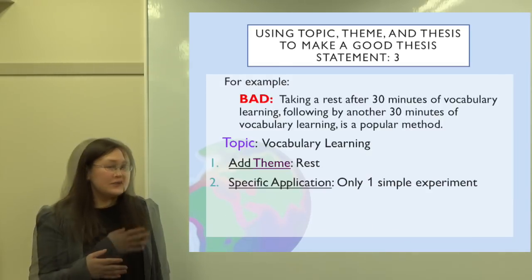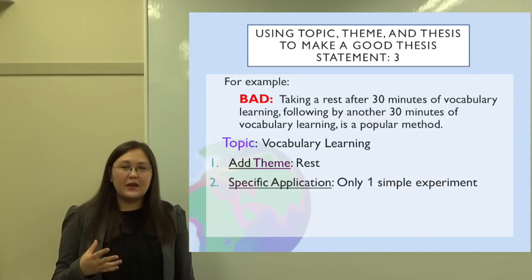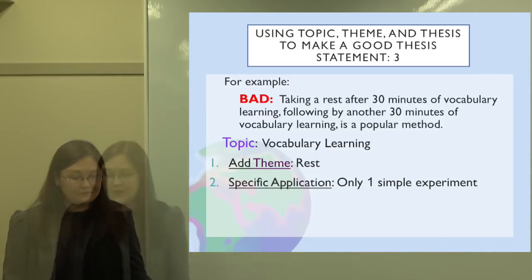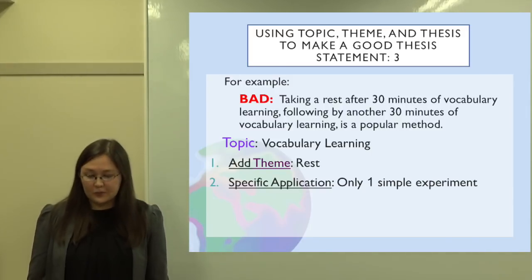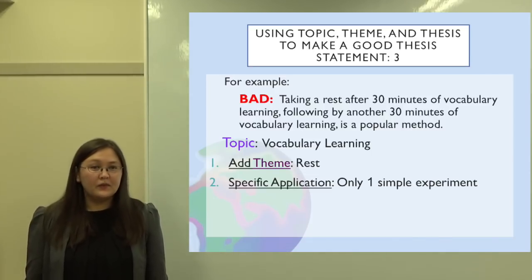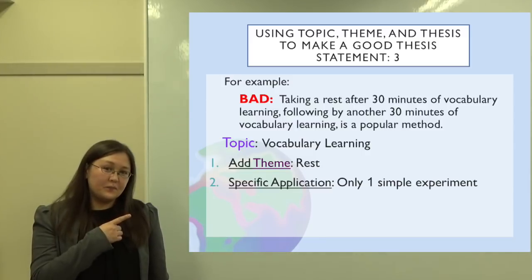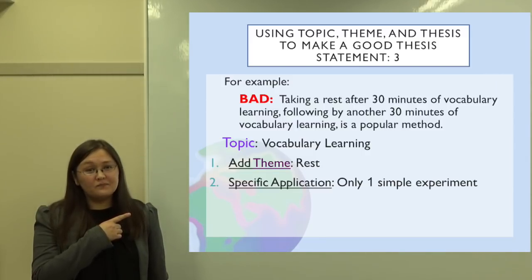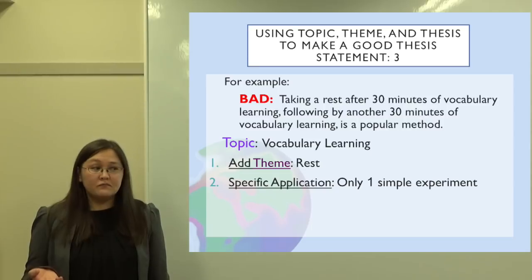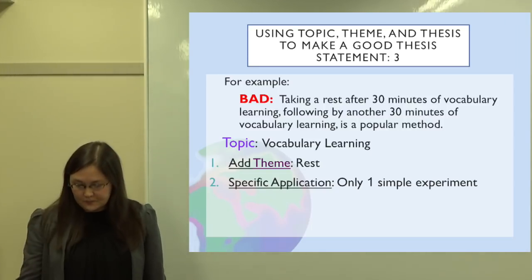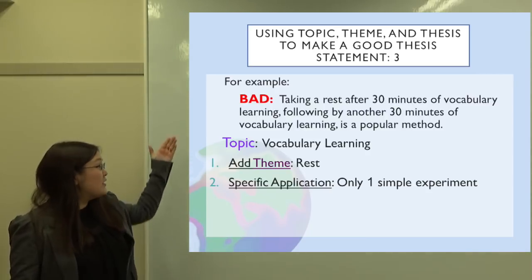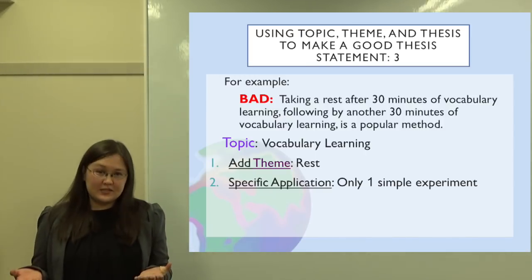Let's look at some different examples — bad, better, and good — from the same narrowed theme. Here's a bad example: 'Taking a rest after 30 minutes of vocabulary learning, followed by another 30 minutes of vocabulary learning, is a popular method.' What's wrong with this as a thesis statement? One problem is it's a mere fact. It's just 'it's a popular method' — we can find that information in the world, there's no opinion about this. So even though it has been sufficiently narrowed, this is bad as a thesis statement because it's just a mere fact. We need to avoid mere facts.